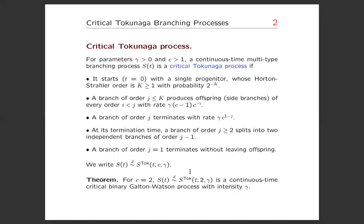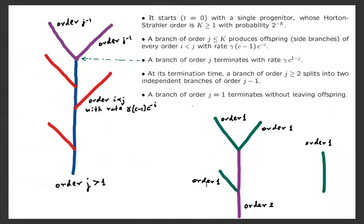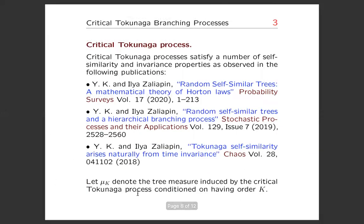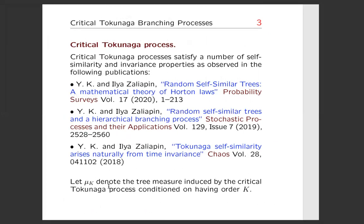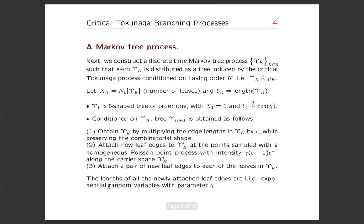Let μ_k denote the tree measure induced by the critical Tokunaga process when we condition on starting with order k. So we create a Markov tree process ε_k, where each ε_k is distributed as a tree induced by the critical Tokunaga process conditioned on having order k.